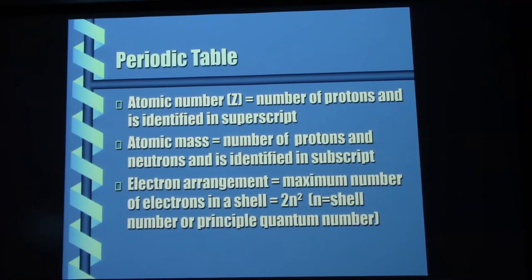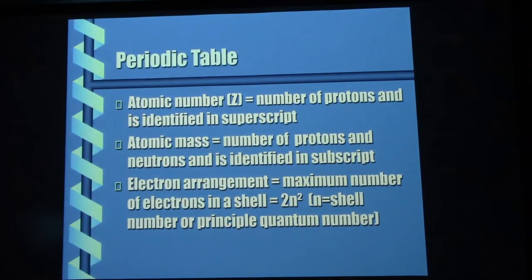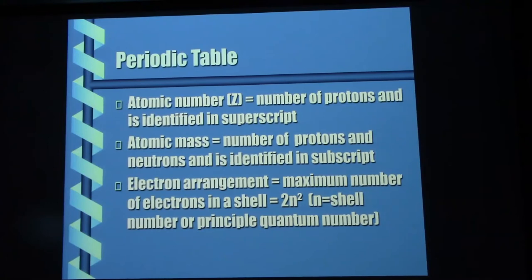Electron arrangement: the maximum number of electrons in any given shell is 2n², where n is the shell number. The K shell is shell number 1 — so 1 squared is 1, times 2 is 2. Maximum electrons in the K shell is 2. The next shell up is the L shell, shell number 2 — 2 squared is 4, times 2 is 8. So we're allowed up to 8 electrons in the second shell. This keeps going up — since we're squaring n, as shell numbers go up, the number of electrons they can accommodate goes way up.